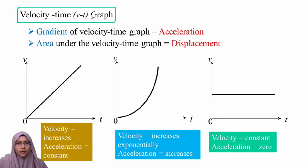For the velocity-time graph, the gradient of the velocity-time graph equals acceleration, and the area under the velocity-time graph equals displacement. If the velocity is increasing with a constant gradient, the acceleration is constant. If the velocity is increasing exponentially with a gradient going from lower to higher, the acceleration is increasing. If the velocity is constant, the acceleration is zero.